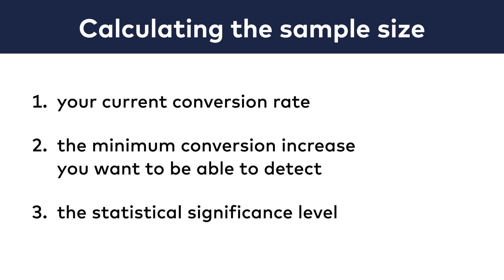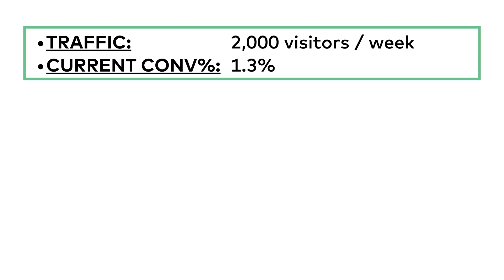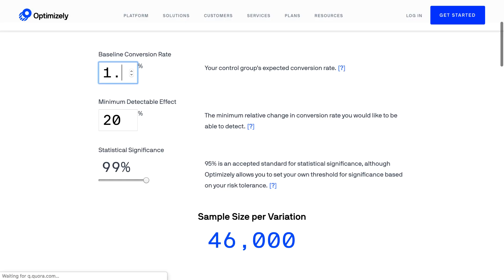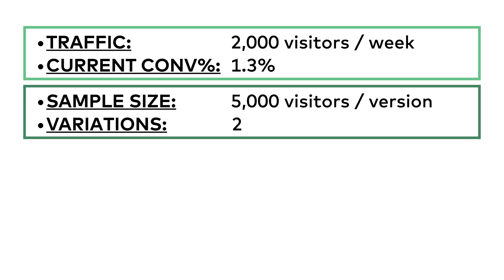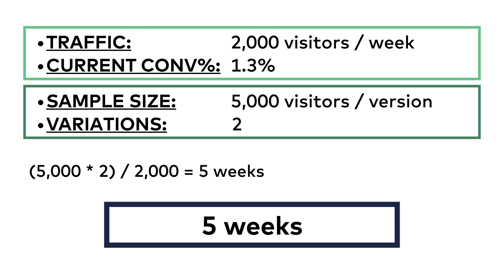When you are running an experiment on your website, you can also calculate the estimated number of days you have to run your test for. Let's say you have a landing page with 2,000 visitors per week, you want to collect email subscribers, your baseline conversion rate is 1.3%, and you are aiming for at least a 50% conversion increase with 99% statistical significance. In this case, you will need 5,000 users per variation. Since you have 2,000 visitors per week, you will have to run this test for about 5 weeks to collect a big enough sample size.